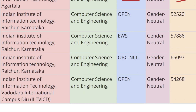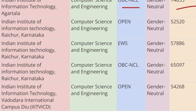Next in the list we have IIIT Raichur, Karnataka. For Open category the cutoff rank is 52,520, for EWS category the cutoff rank is 57,886, and for OBC-CL the cutoff rank is 65,097.